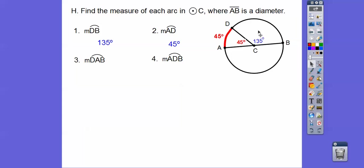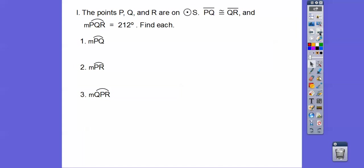Arc DAB, so I'm going to go DA and then B. We're going to add this half of a circle, 180, with the 45, and we get 225 right there. Arc ADB, that's just the top half of the circle, which is 180 right there.